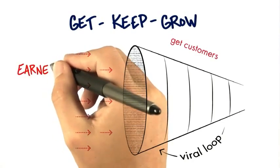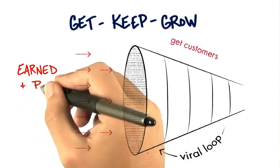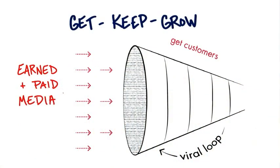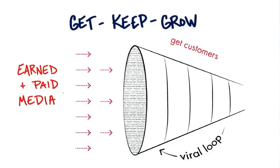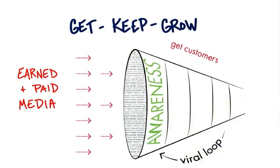The first thing you're going to use is earned and paid media. You might run TV ads, radio spots, newspapers, your website, you might send out email. The first thing you're doing with this paid media is trying to get people aware that you even have a flight from New York to Orlando. This first step in a physical channel is generating awareness — people just need to know that this thing exists.